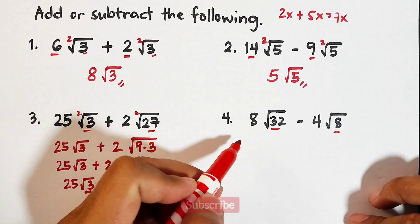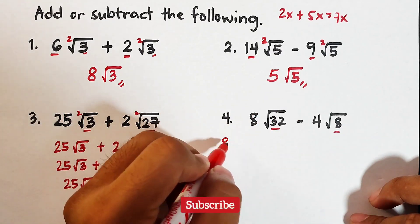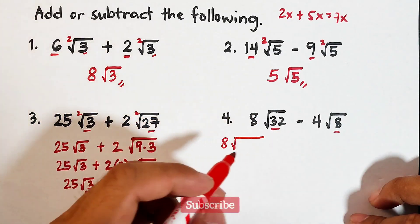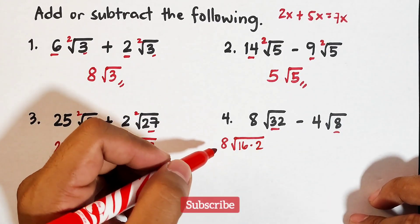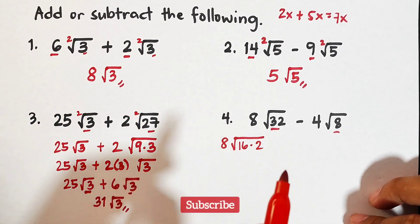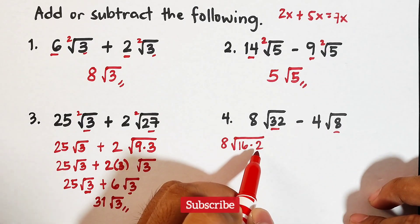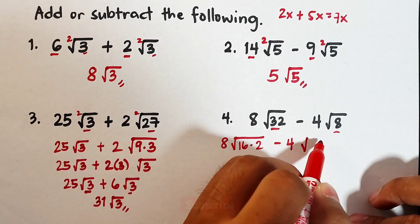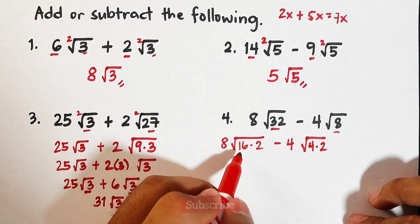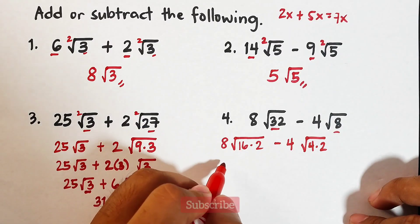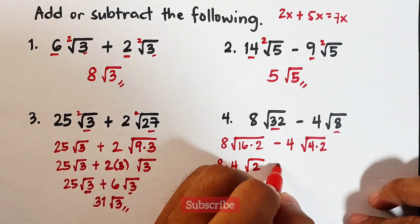For number 4, the radicals are also not the same. We need to extract the square roots of 32 and 8. For 32: factor it as 16 times 2. We have 8 times the square root of 32. The square root of 16 is 4, so it becomes 8 times 4 times square root of 2, which is 32 square root of 2.